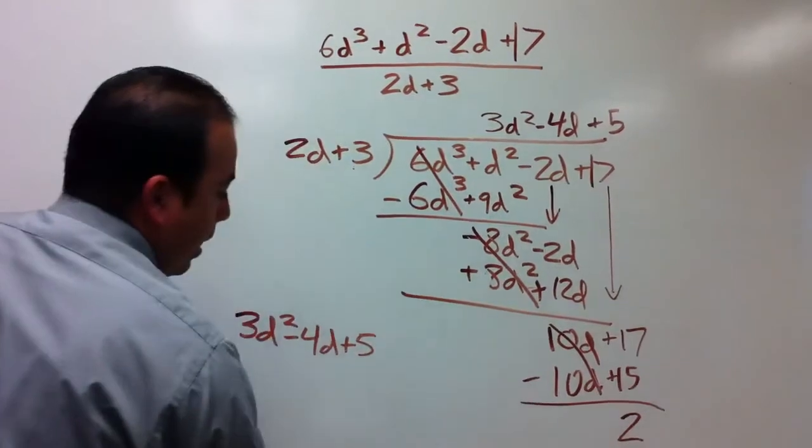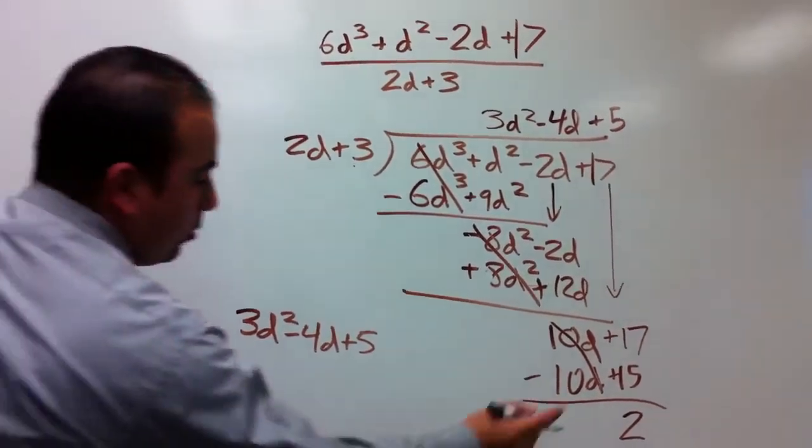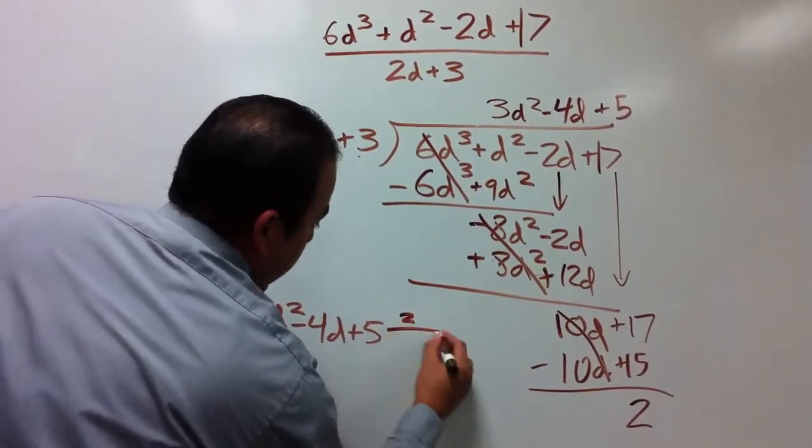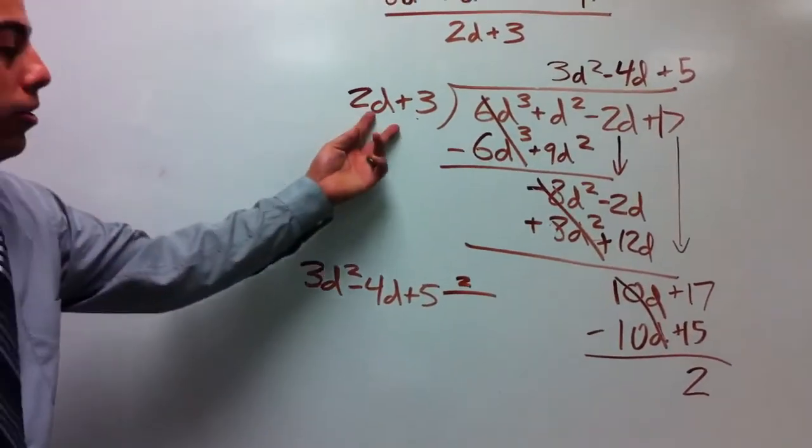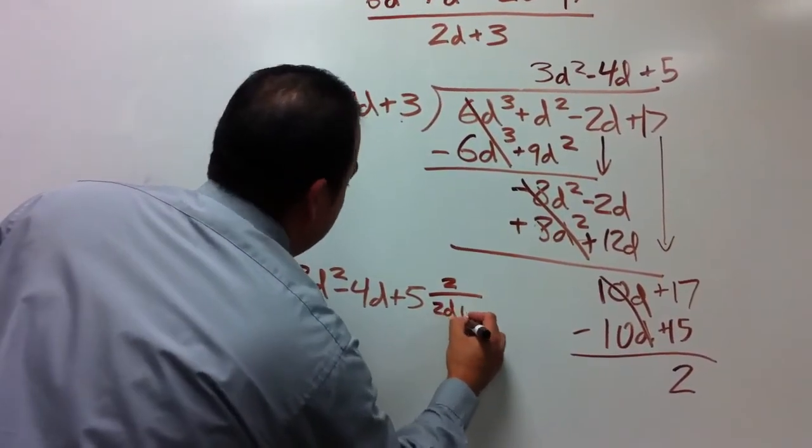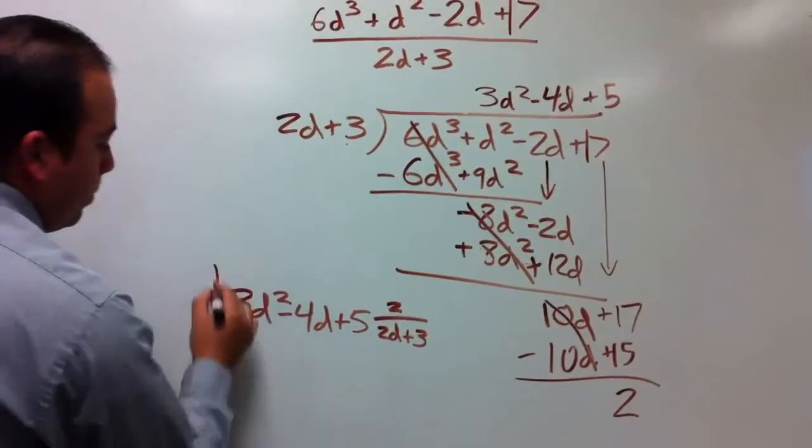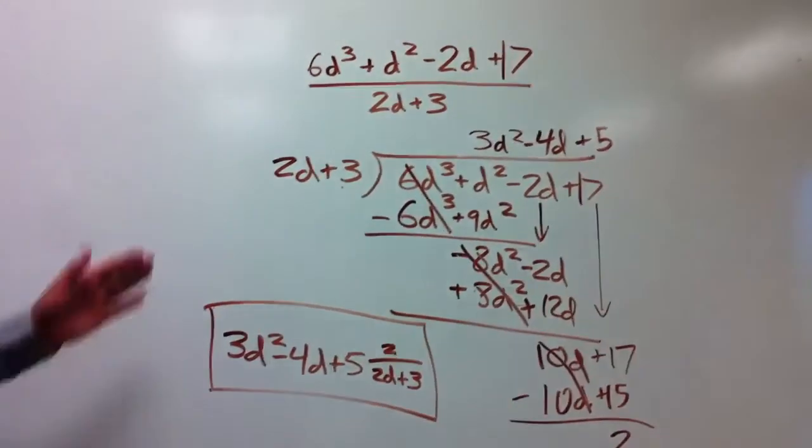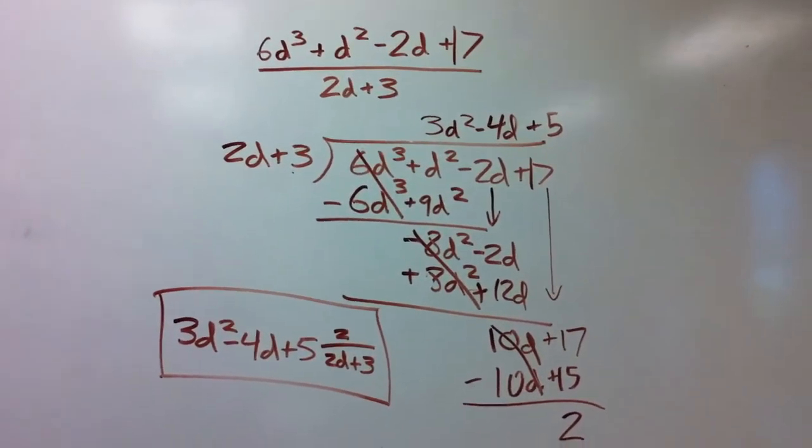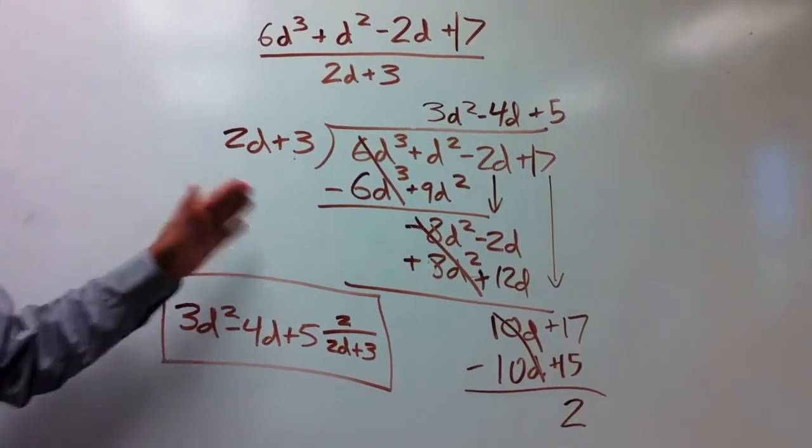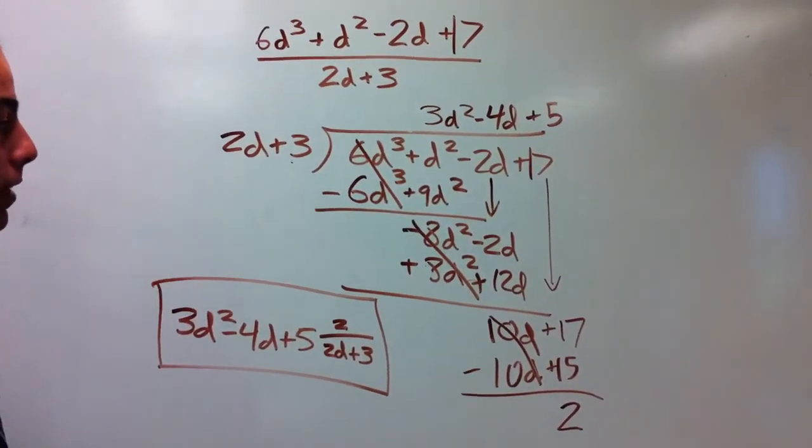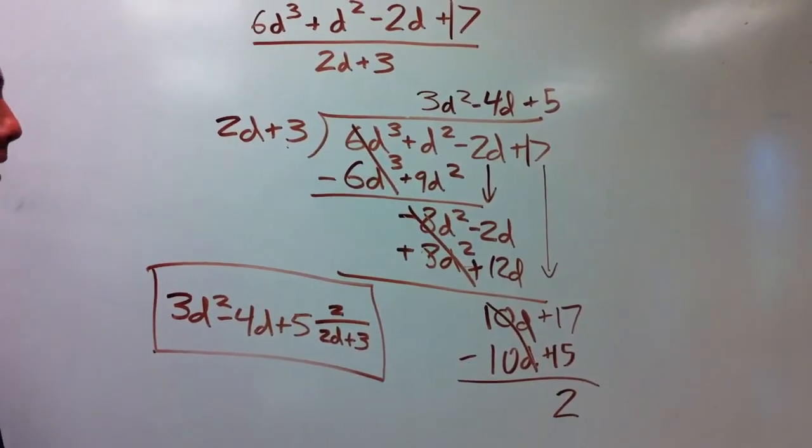For the remainder, I'm going to put it in fraction form. The numerator is your remainder, and your denominator is always your divisor, which in this case is 2d + 3. So it's just like division. You shouldn't have that hard of a time doing it. If you do, keep referring back to this video, and hopefully you'll figure out the steps you're going wrong at. Thank you.